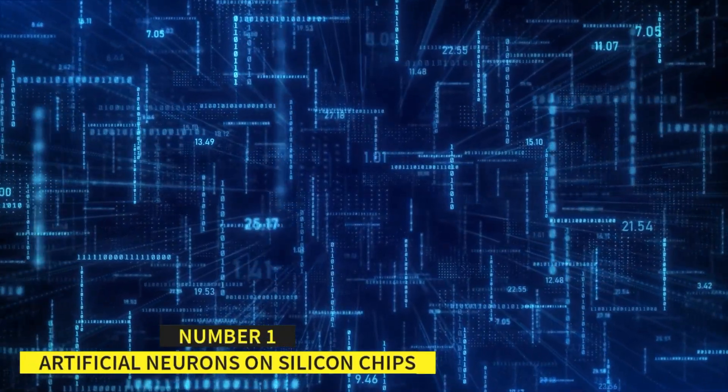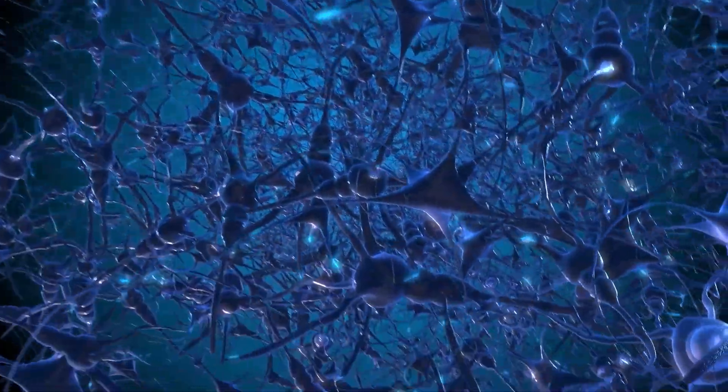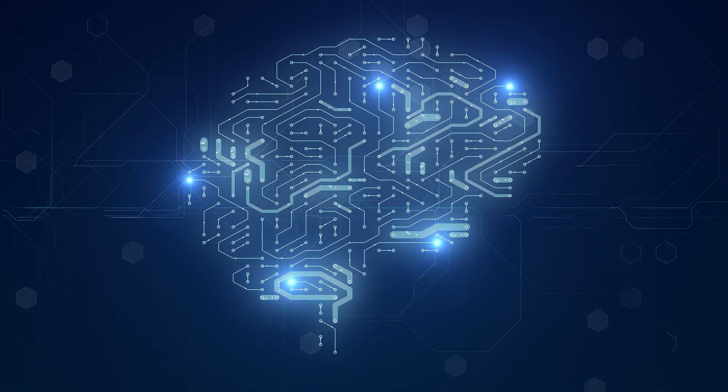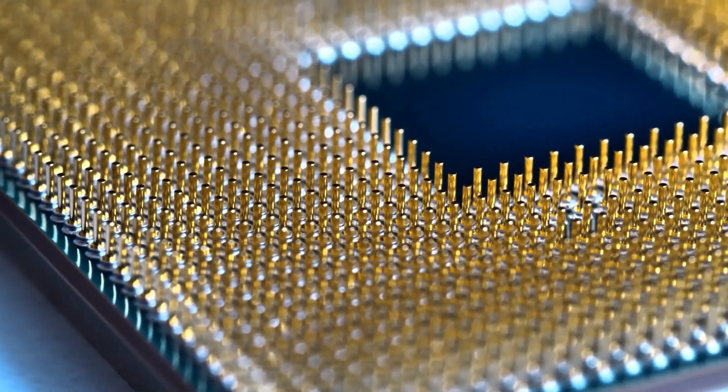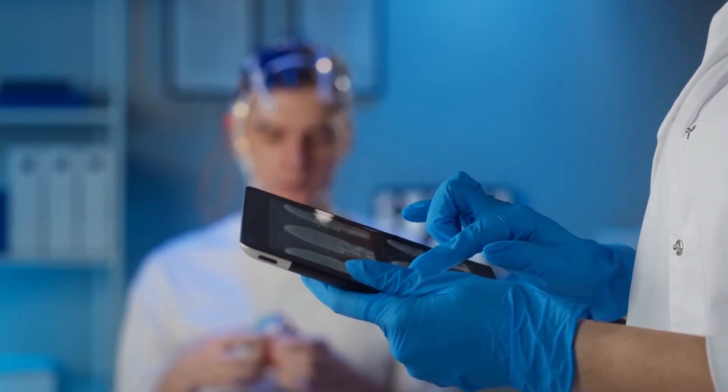Number 1, Artificial Neurons on Silicon Chips. This innovation allows us to open up the previously black box neurons and study them in detail. Professor Alain Nogaret, who led the project at the University of Bath, describes their work as paradigm-changing because it provides a robust method to reproduce the electrical properties of real neurons in minute detail.